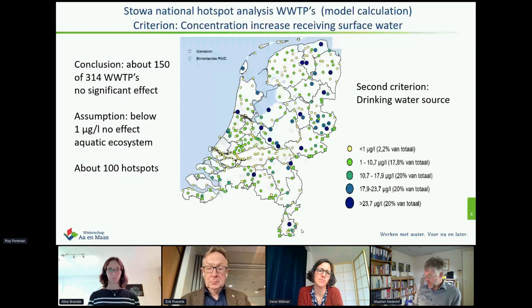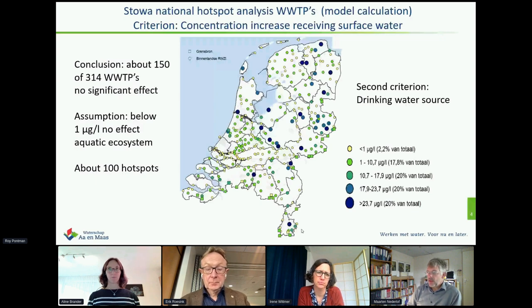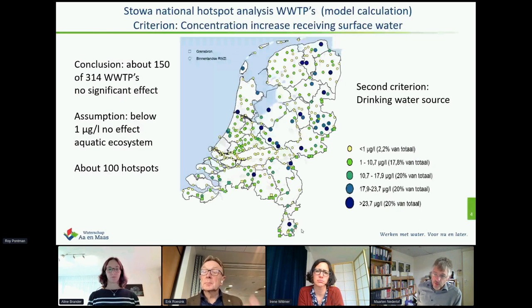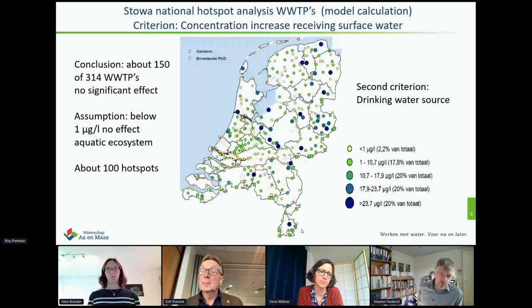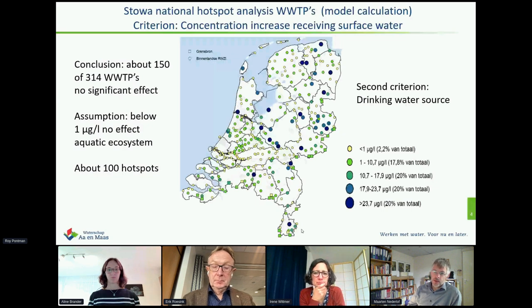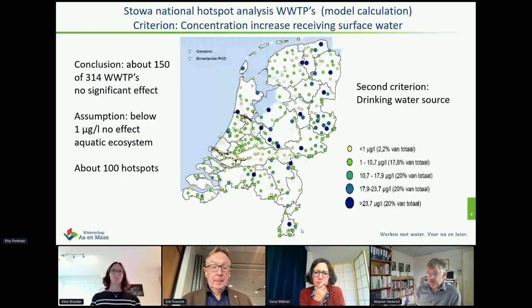In the Netherlands, we did what we call a hotspot analysis. Based on model calculations, we did an inventory of all 314 wastewater treatment plants in the Netherlands. It appears that for about 100 wastewater treatment plants, there is a significant effect on water quality — either due to ecotoxicity in the receiving surface water or because it threatens drinking water sources. So we have about 100 hotspots in the Netherlands that are possible candidates for the implementation of additional treatment technologies.